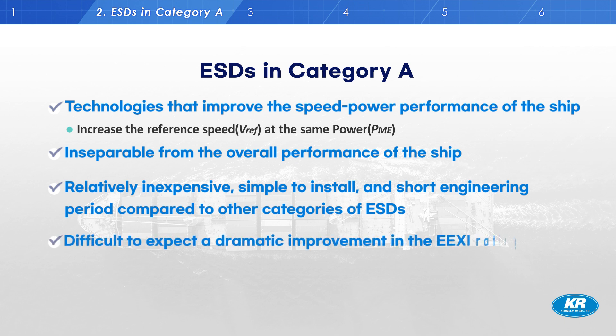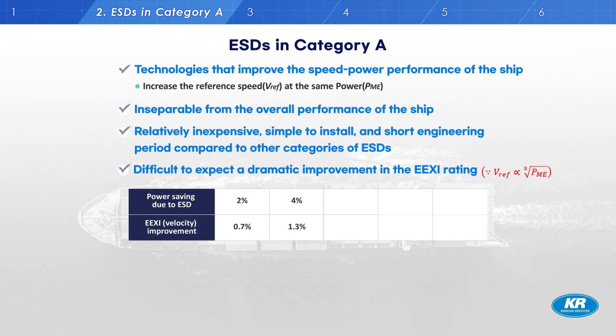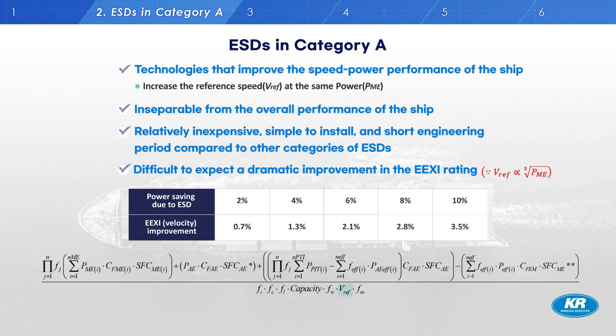However, it is rather difficult to expect a dramatic improvement in the EEXI rating, because these effects are reflected as reference speed, and speed is proportional to the cube root of the power saving ratio. For example, if you install an ESD that can save 10% main engine power, you can expect about a 3.5% decrease in EEXI rating.